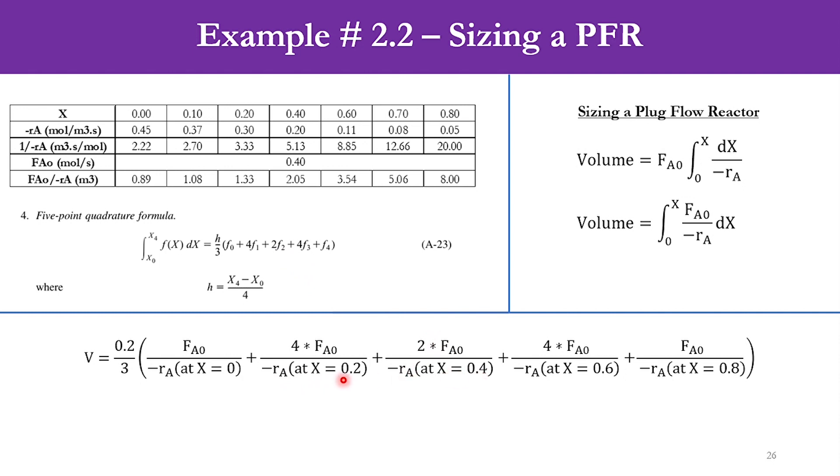This 0.4, 0.2, 0 means there is a step size of 0.2 in the system, which is dictated by the value of H. Then 4 into FA0 over minus RA at x = 0.6, and finally FA0 over minus RA at x = 0.8. This F4 corresponds to X4, the upper limit, and F0 corresponds to the lower limit, X0.